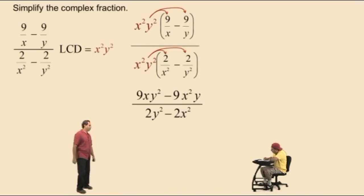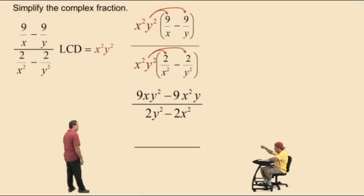Now we're not done. Now we have to look for greatest common factors. Now notice here Charlie, in our numerator, we have a greatest common factor. What is it? 9xy. Very nice. And that leaves us with y subtract x.